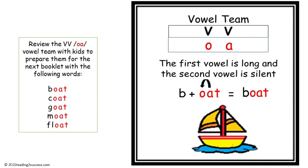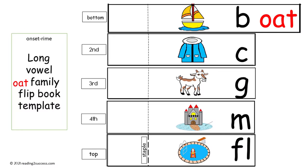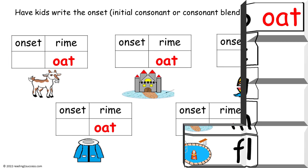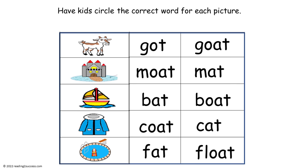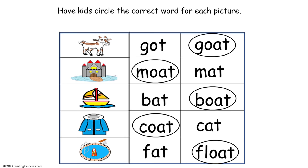This next set of words follows the onset rhyme vowel team pattern with OA. The words kids will be studying are boat, coat, goat, moat, and float. This is the template for the booklet. Have kids write the onset — the initial consonant or consonant blend — for each word. This is the completed example. Then have kids circle the correct word for each picture. This is the completed example.